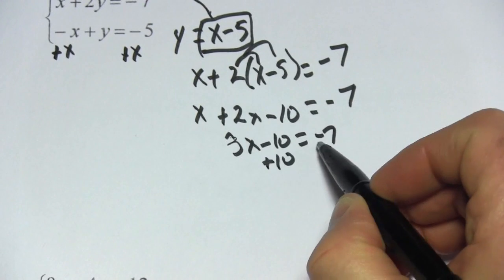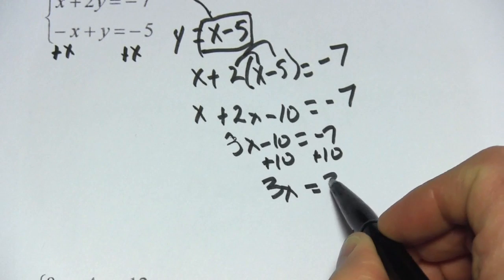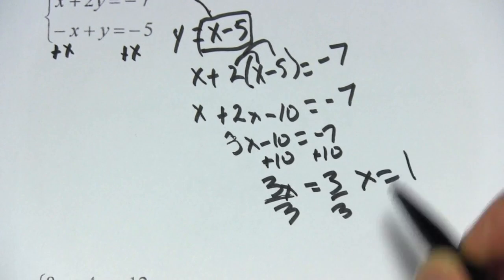And we can add 10 to both sides to get the x term alone. We'd get 3x equals 3, divided by 3, we get x equals 1.